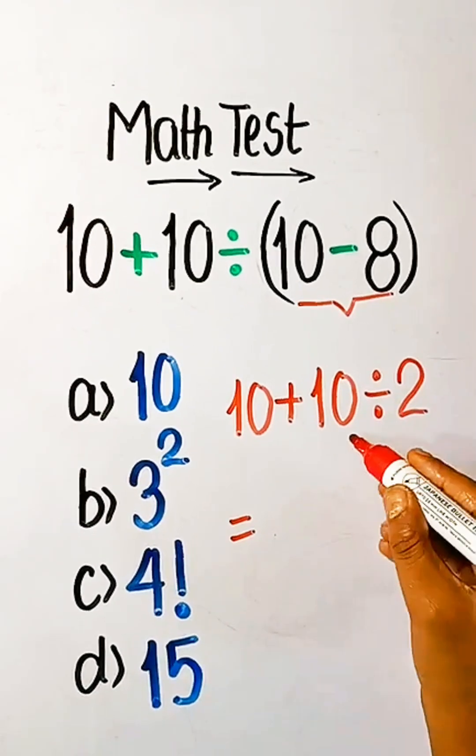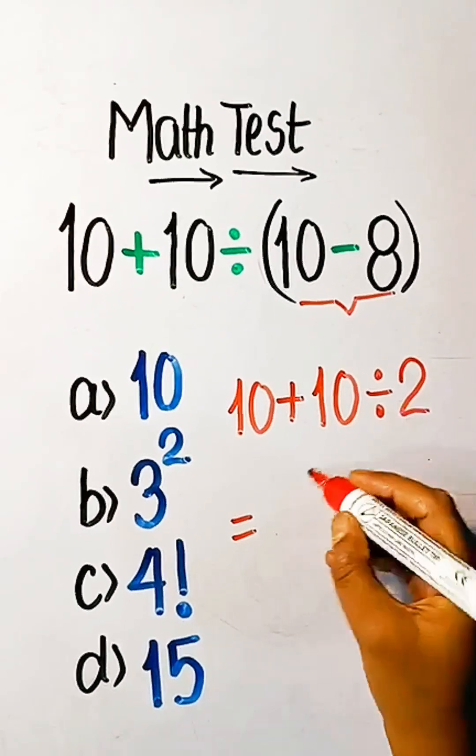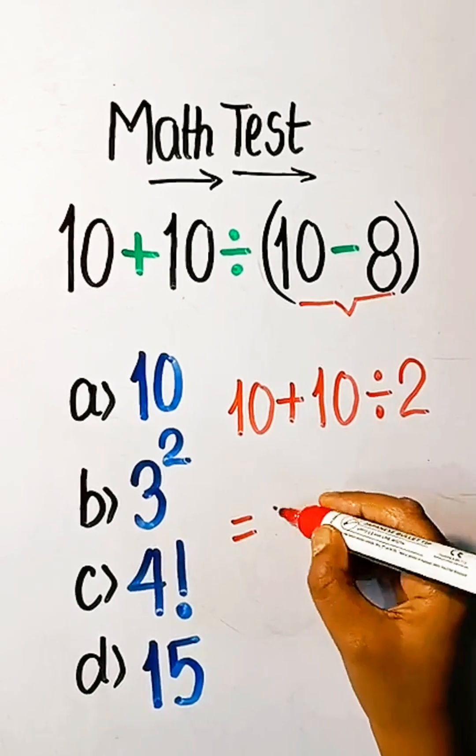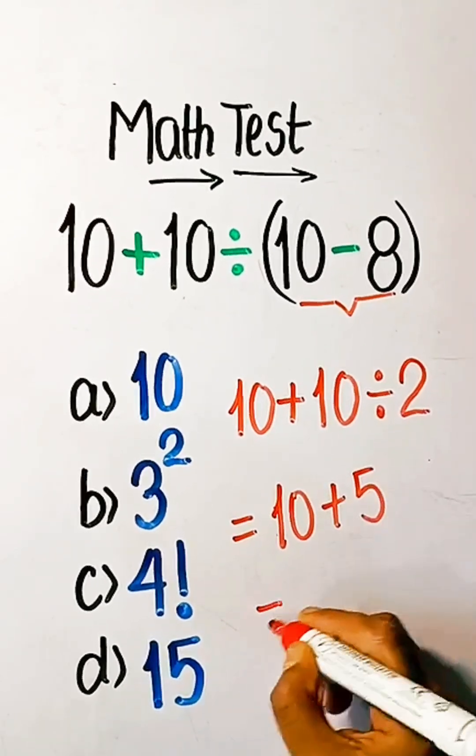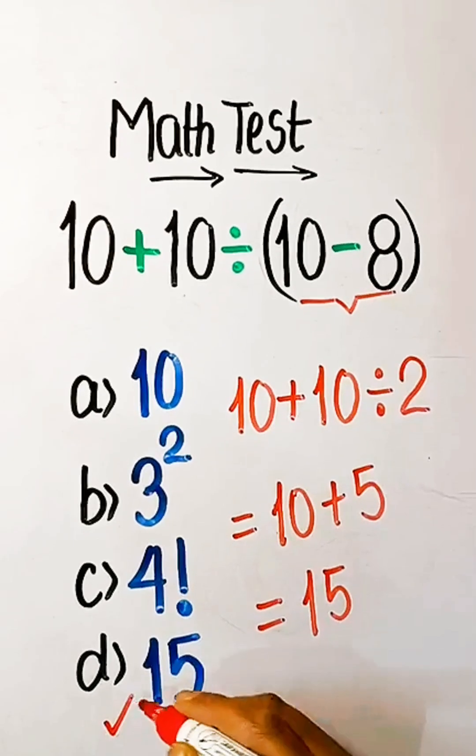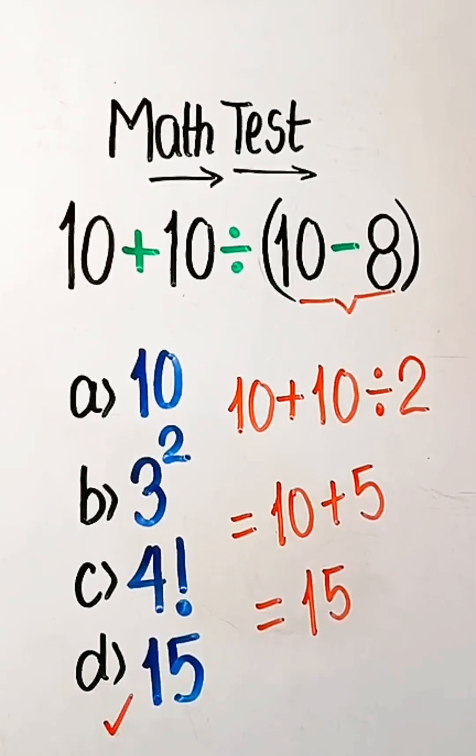10 divided by 2 is 5, so we can write 10 plus 5 equals 15. Option D will be the correct answer.